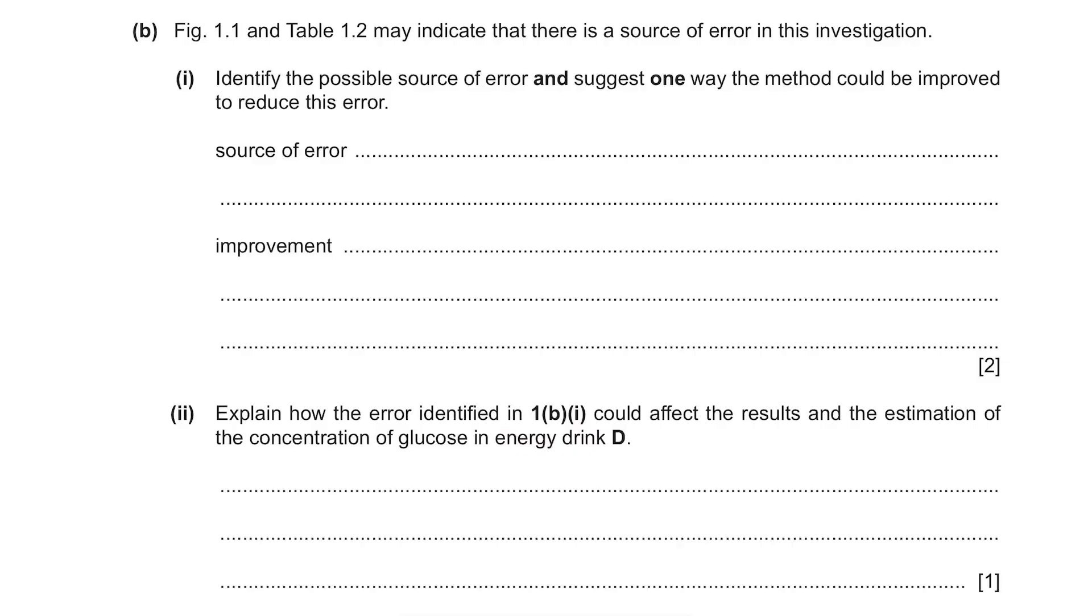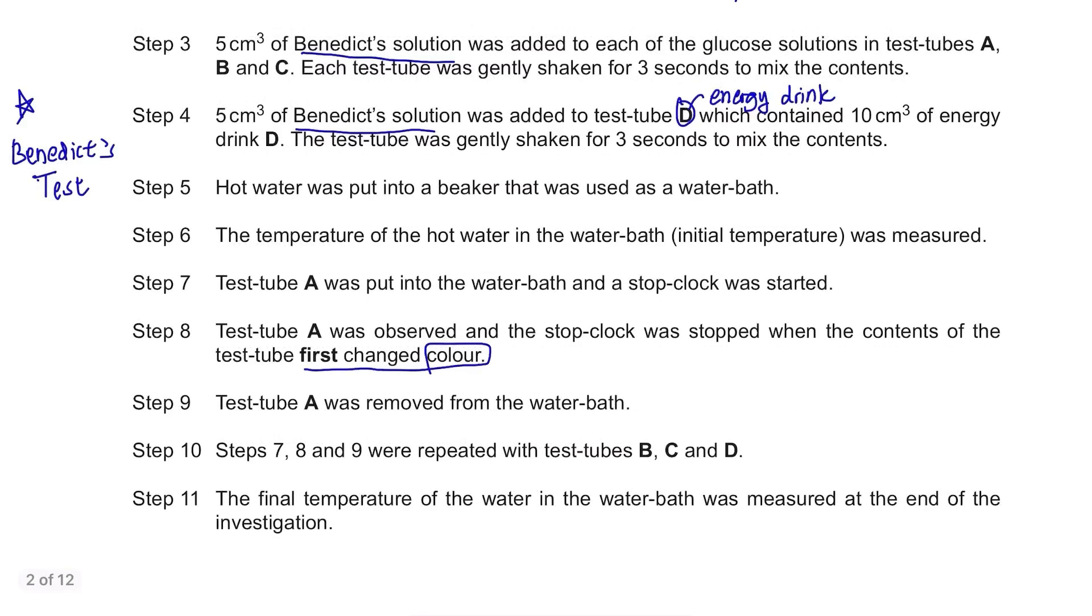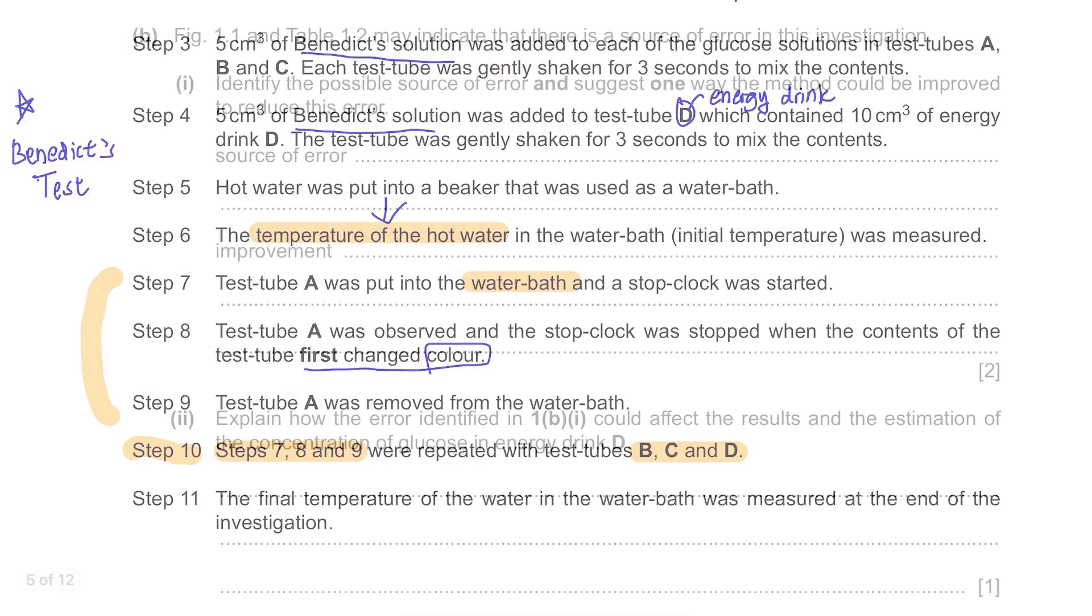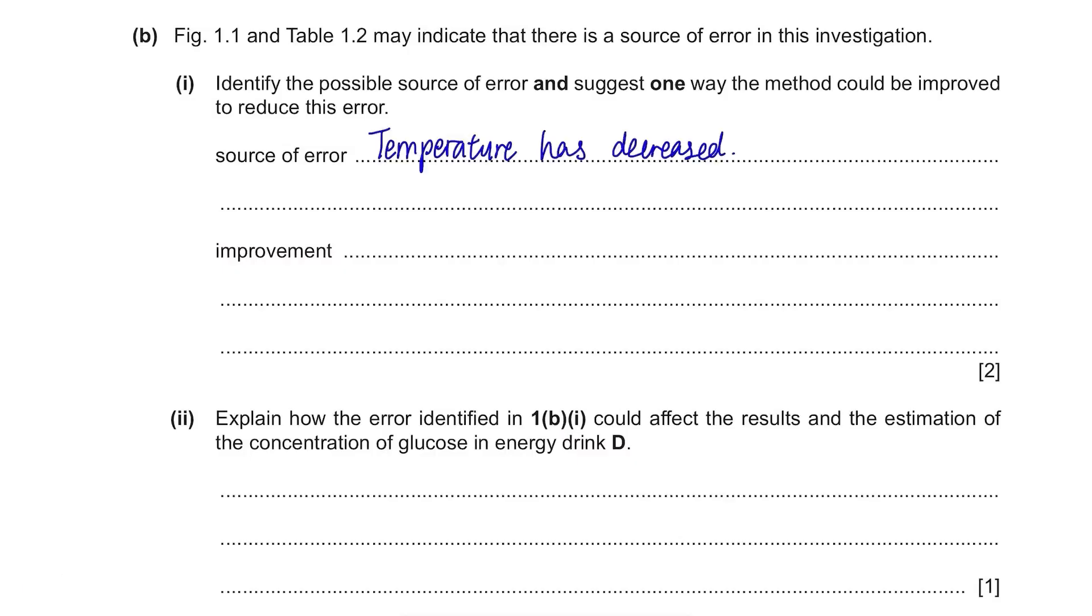Figure 1.1 and table 1.2 may indicate that there is a source of error in this investigation. Identify the possible source of error and suggest one way the method could be improved. Going back to the steps, in step 10, they are going to repeat the experiment for B, C and D starting from step 7. But as time passes, the temperature of the water bath would decrease. This is the error. The source of error is the temperature has decreased and the improvement is to maintain the temperature. We can do so by using a thermostatically controlled water bath. You can also say by using a Bunsen burner or adding hot water throughout the experiment and continuously monitoring the temperature.